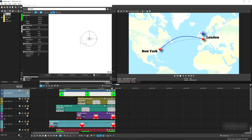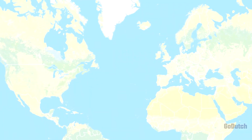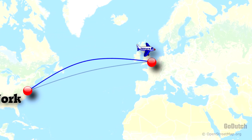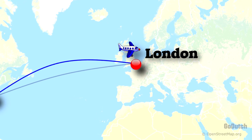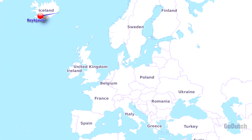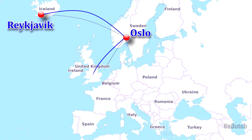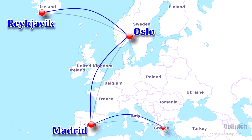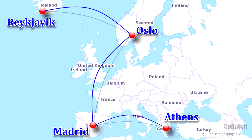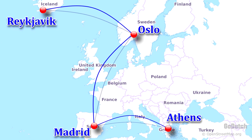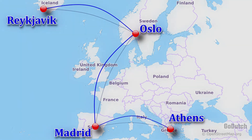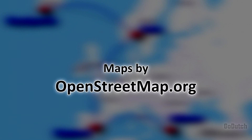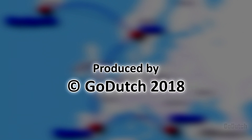Now let's see the result — we're leaving New York and flying all the way to London. You can also do multi-stop routes: Reykjavik to Oslo, Oslo to Madrid, Madrid to Athens. For a vertical route like Oslo to Madrid, use a vertical wipe from top to bottom. Thanks for watching — if you like it, please give it a thumbs up!